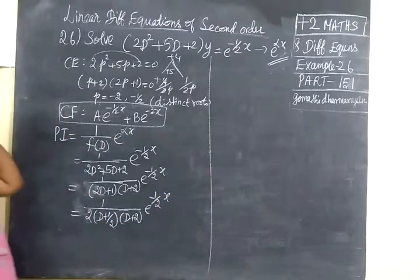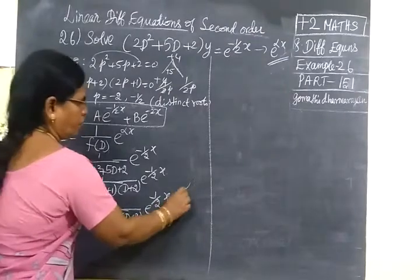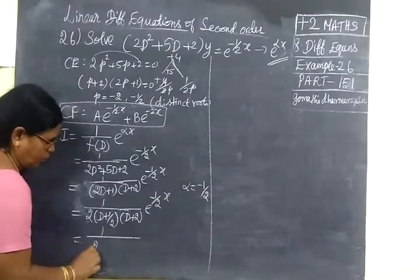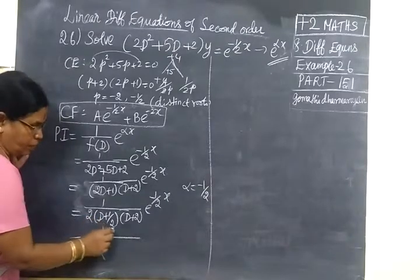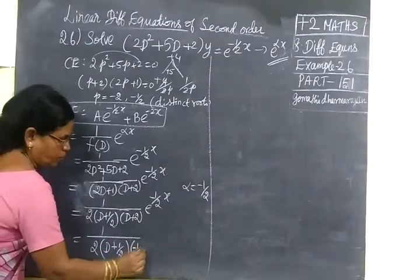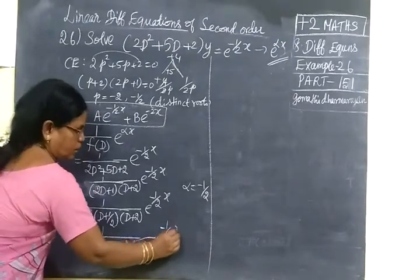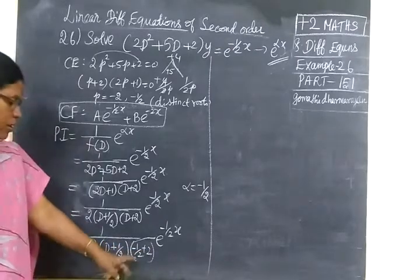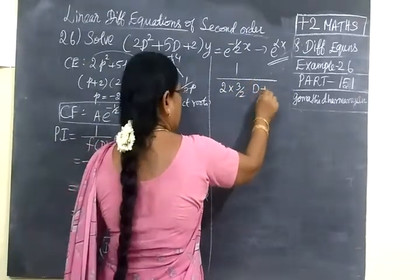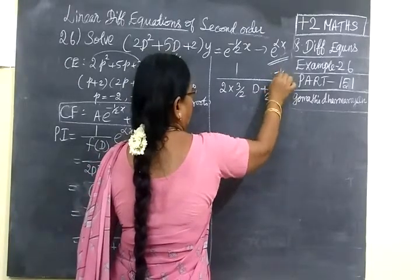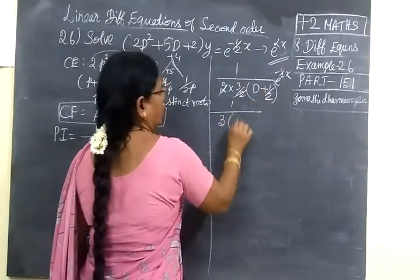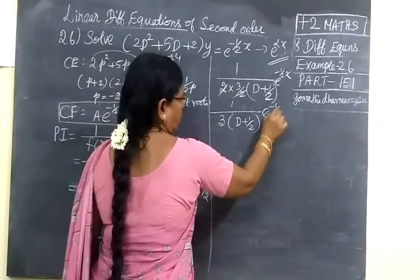Now substitute D = α = −1/2. In the factor (D + 1/2), substituting D = −1/2 gives 0, so we leave that factor as is. For (D + 2): substituting D = −1/2 gives −1/2 + 2 = 3/2. So we get (1/2) × (1/3/2) × 1/(D + 1/2) × e^(−s/2), and the 2s cancel to give (1/3) × 1/(D + 1/2) × e^(−s/2).